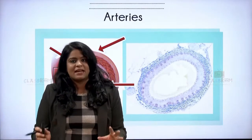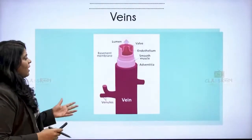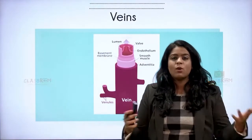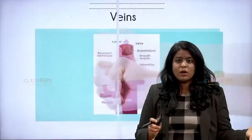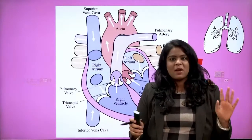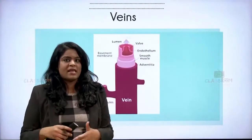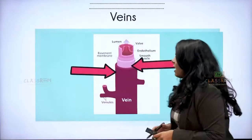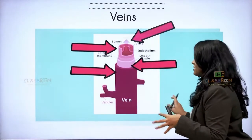Now coming to the vein. Veins always carry impure blood — whenever you see a vein in your books or videos, it's always represented in blue. But one vein carries pure blood, and that is the pulmonary vein. So it's not true that arteries always carry pure blood and veins always carry impure blood. For now, remember: arteries carry blood away from the heart and veins carry blood towards the heart.